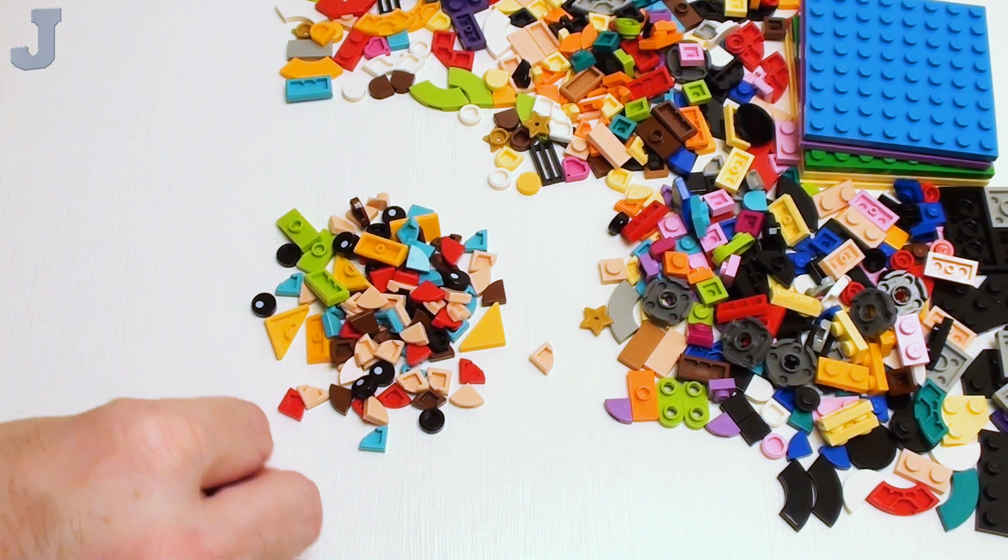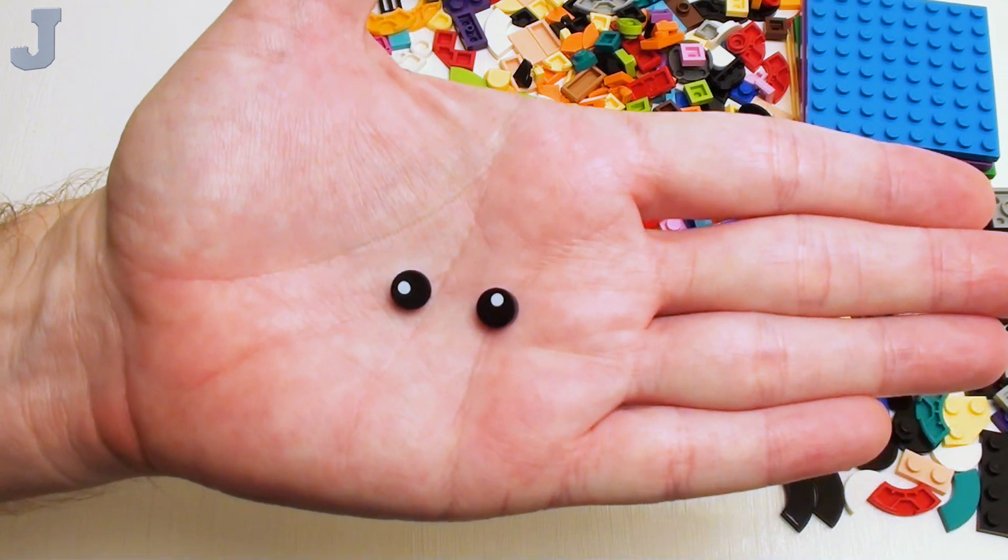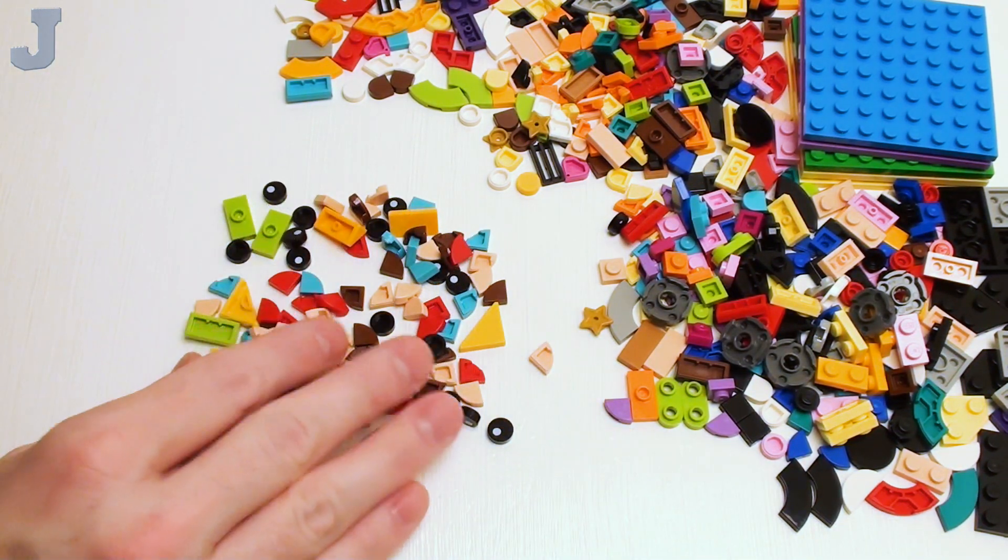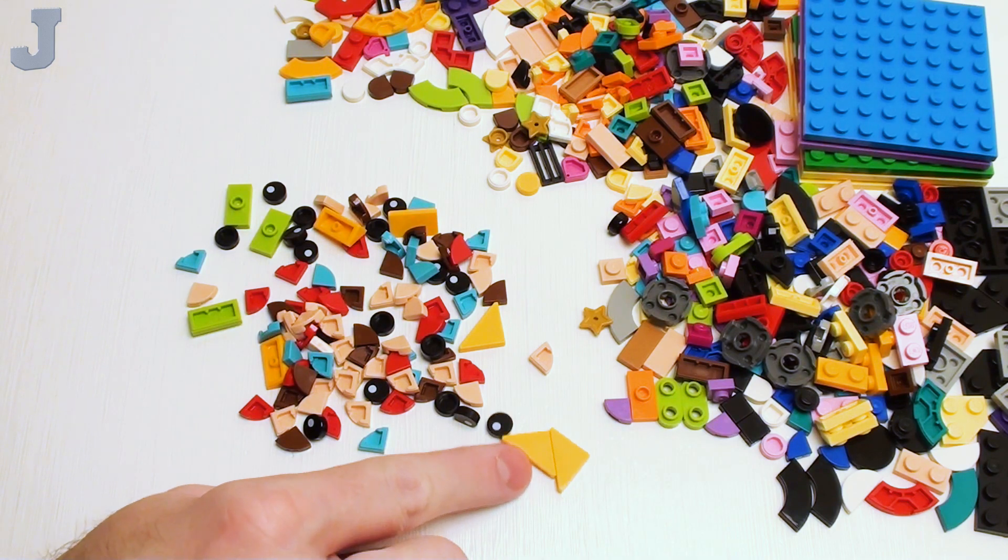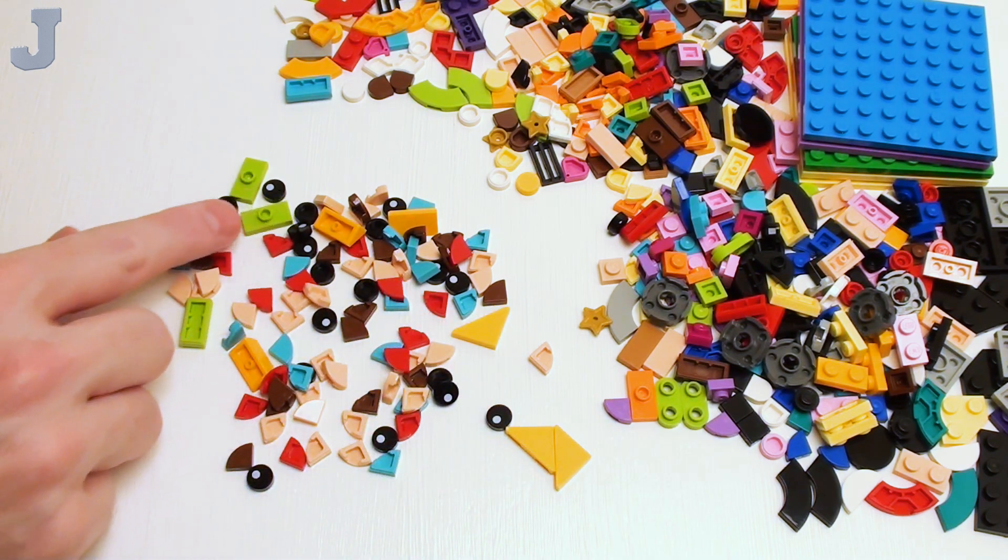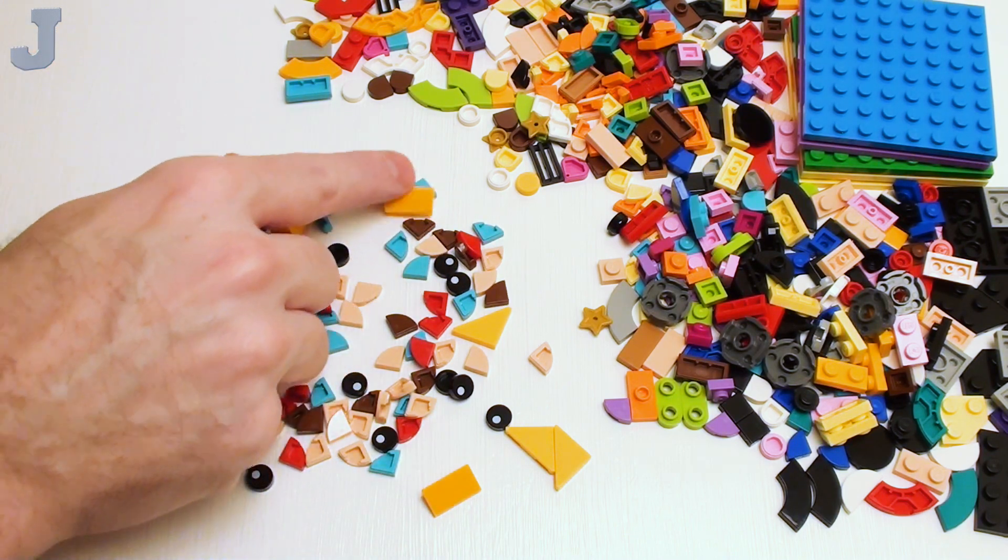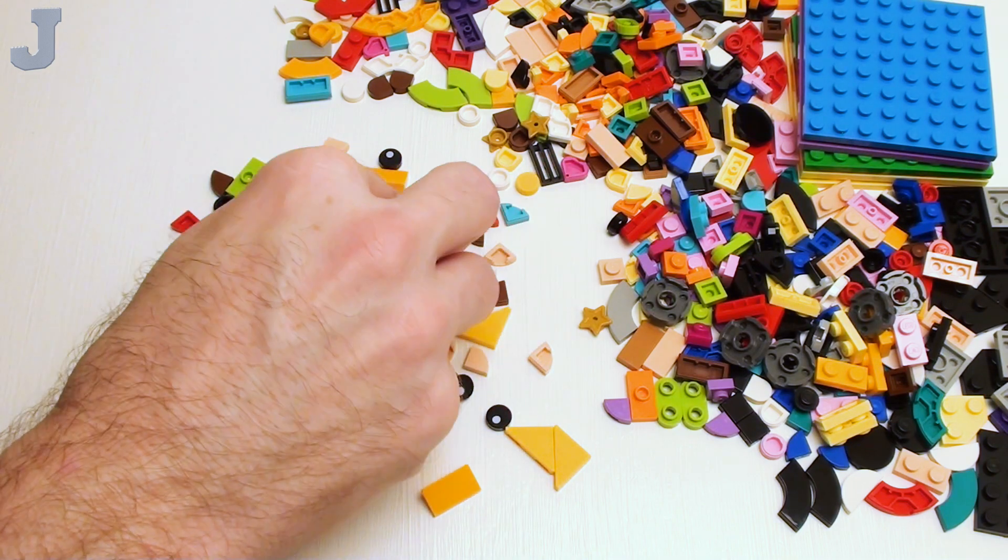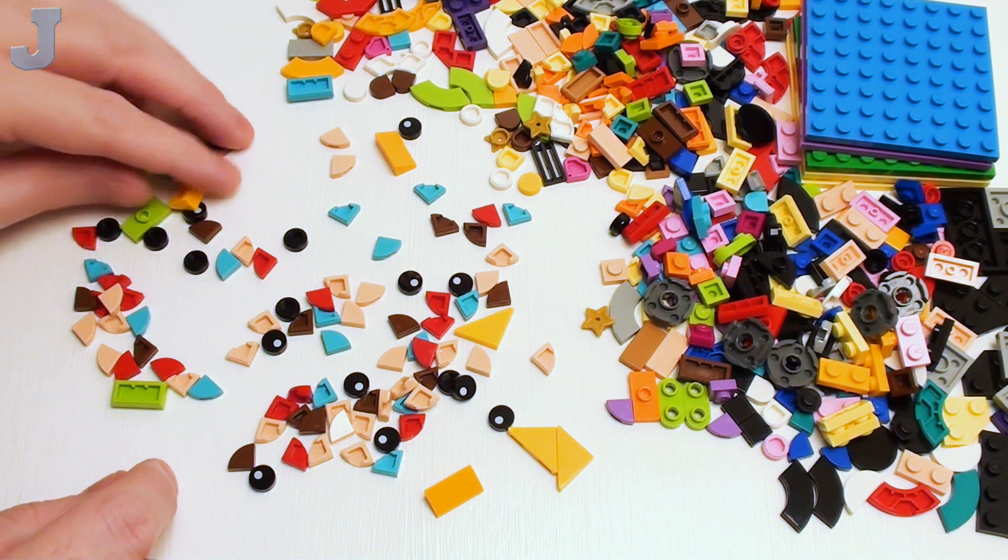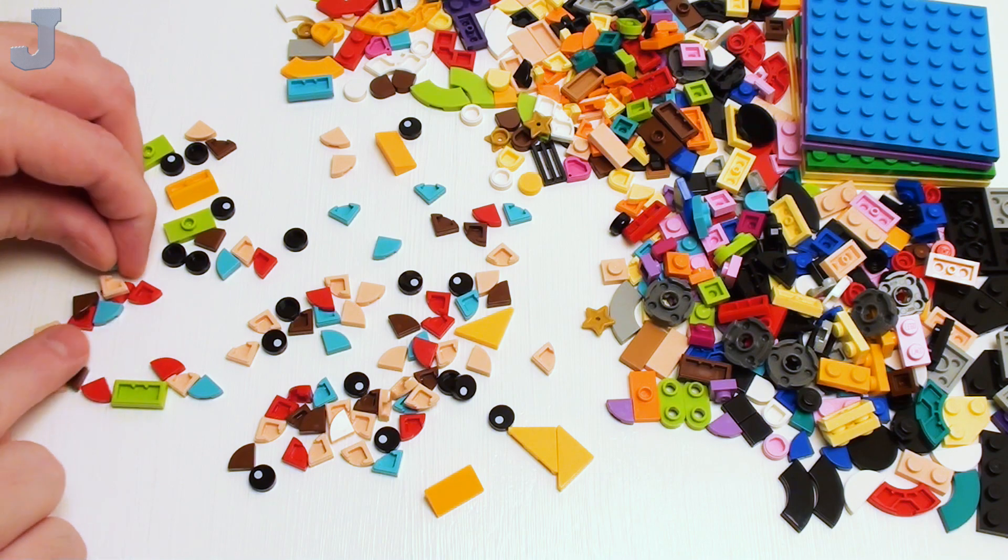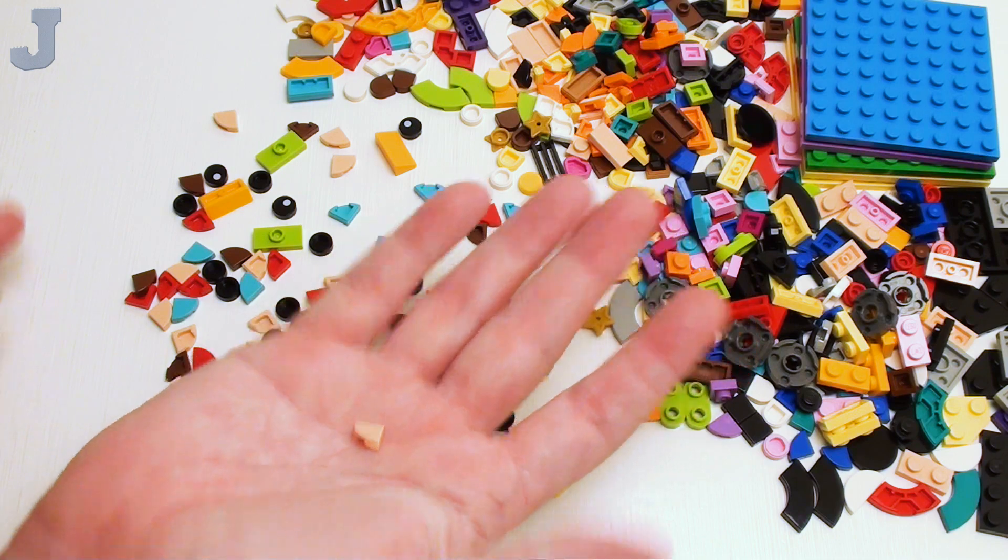And, I do see some printed pieces. So, obviously, these right here must be the eyes. Those are printed. So, I'm going to, I didn't see a sticker sheet. So, that's good. We don't have to fight with any stickers. And, we've got some angler 2x2 half flat tiles there. And, some 1x2x2 cheese slopes. If you're looking for these type of tiles right here, this set's got a bunch of these in different colors.